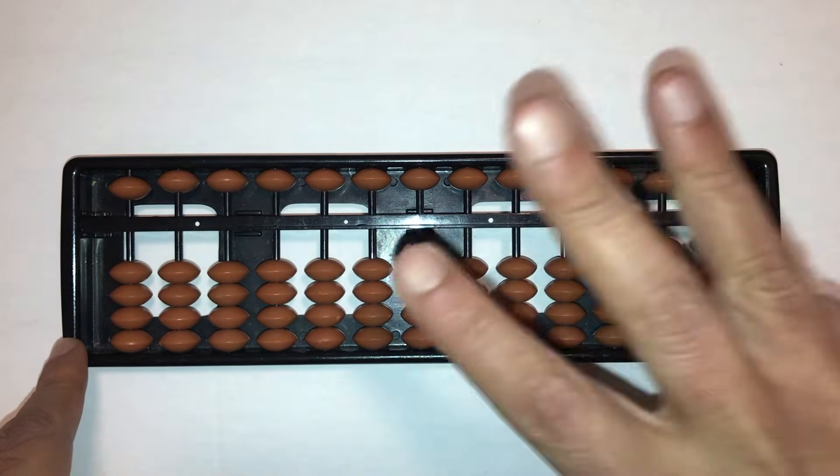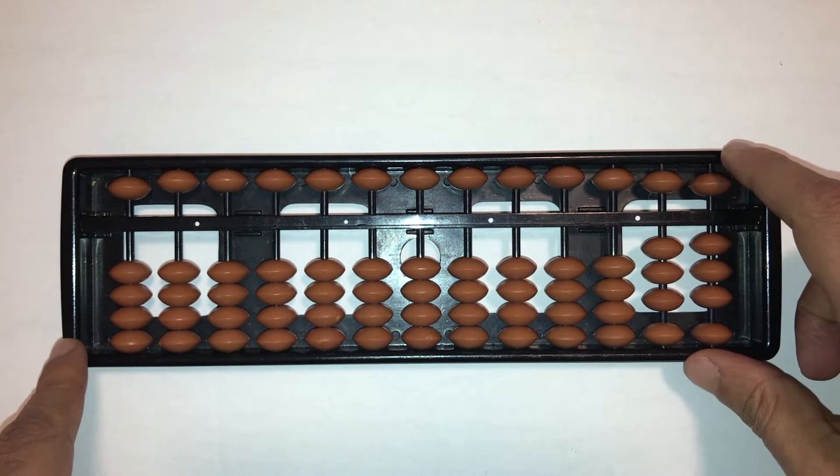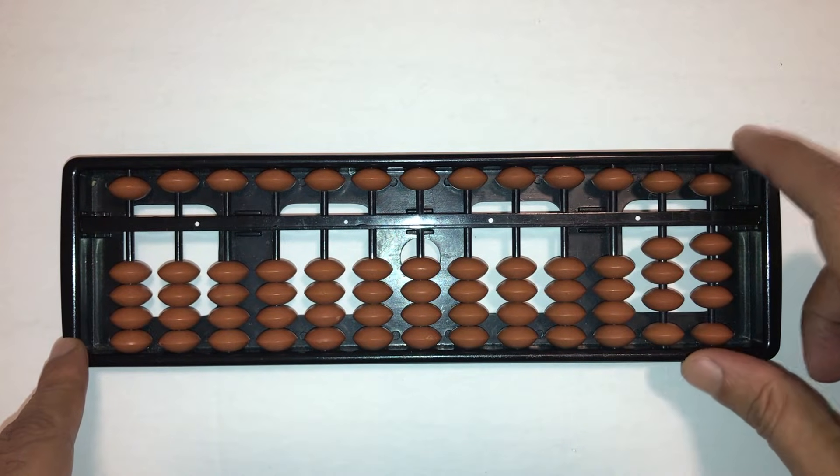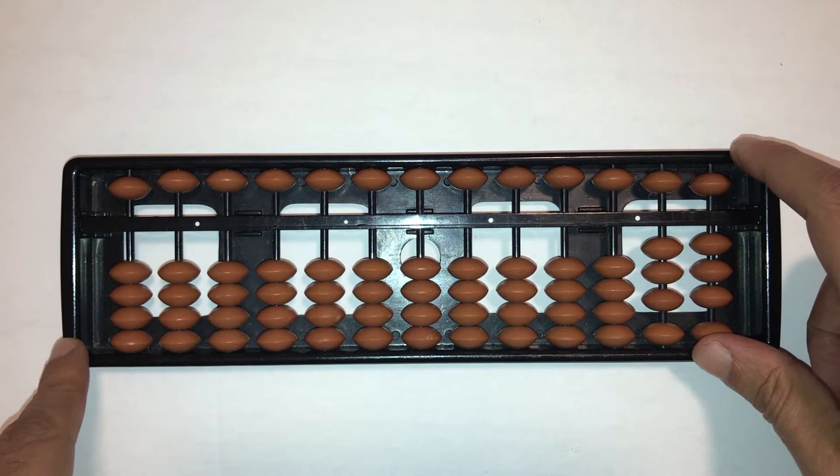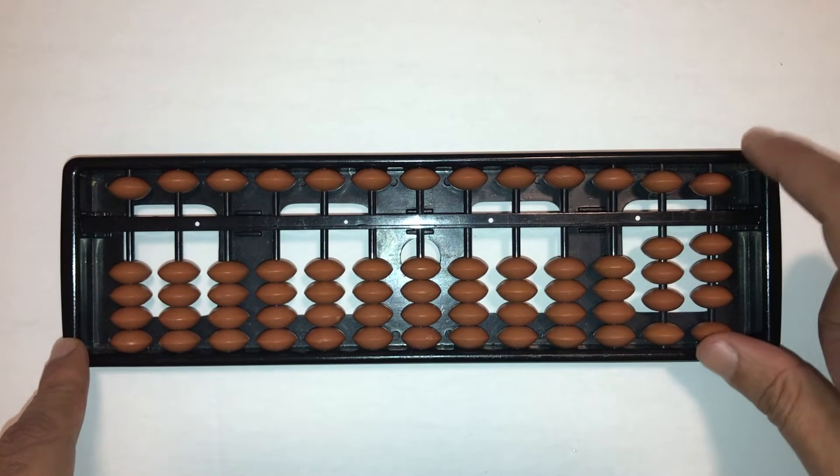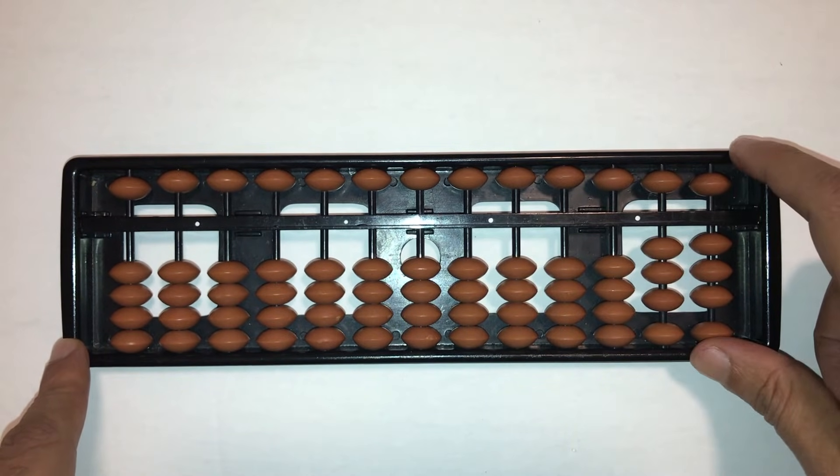There is one that you may have commonly seen with 10 beads—that's not what we need. You need an abacus that kind of looks like this. Now, even in this look, there are two different kinds.